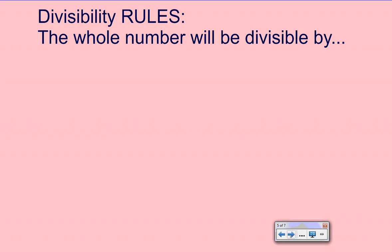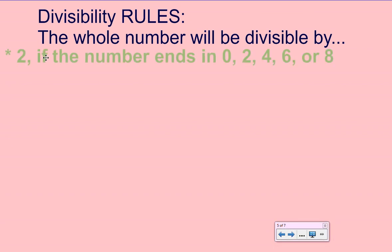Now we can examine some divisibility rules. Go ahead and take out a paper and pencil so you can record these rules, and then we can test them later. Our first rule: a whole number will be divisible by 2 if the number ends in 0, 2, 4, 6, or 8. So if it's an even number, it's divisible by 2.